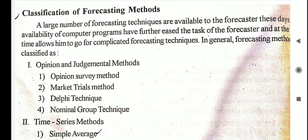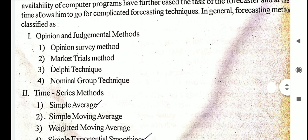In general, forecasting methods are classified into two types. The first one is opinion or judgmental methods, and the second one is time series methods.